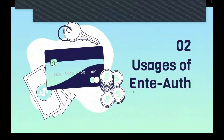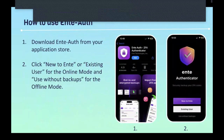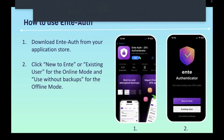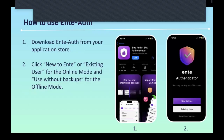How to use Ente Auth: First, go to your App Store or Google Play Store and download the authenticator. Once you get the application, click 'New to Ente' or 'Existing User' based on whether you're a new or existing user. For online mode, or 'Use Without Backup' for offline mode — meaning when you're not using Wi-Fi — as you can see in these two pictures.